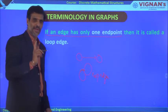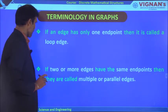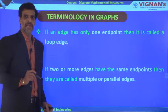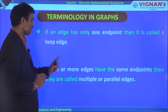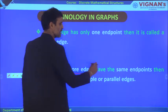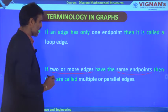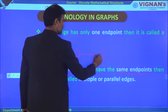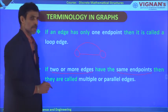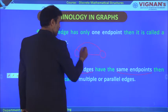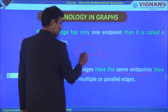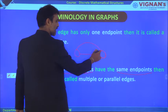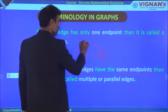If an edge consists of only one endpoint, that is called a loop edge. The second definition: if two or more edges have the same endpoints, they are called multiple or parallel edges. For example, if you take two vertices and draw two edges between them, both edges share the same endpoints. Therefore, those two edges are called parallel edges.